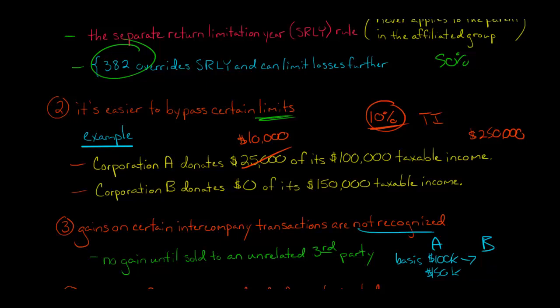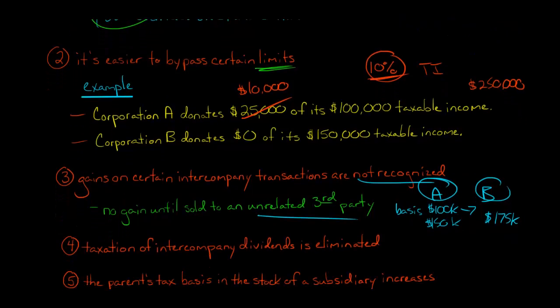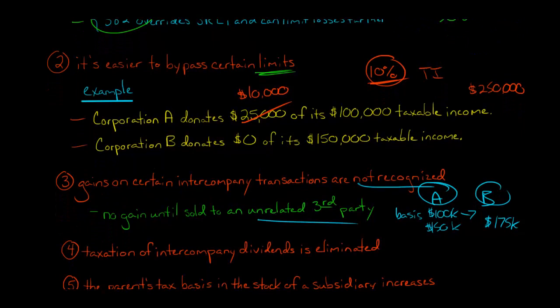Now, if B then took the property and then sold it to an outsider for, let's say, later they sell it for $175,000 to an outside. And when I say an outsider, I mean that's not part of the affiliated group, like some unrelated party. Then in that case, once it's sold to an unrelated party, then the entire gain, so in this case it would be the difference between the basis and the $175,000. So then you'd have a $75,000 gain. But basically when it's a consolidated tax return, it's like you're treating this all as one taxpayer. So you're not going to recognize any gain when there's a sale property from one of the members of the group to another. So that's an advantage because that differs when you have to pay tax on that gain.